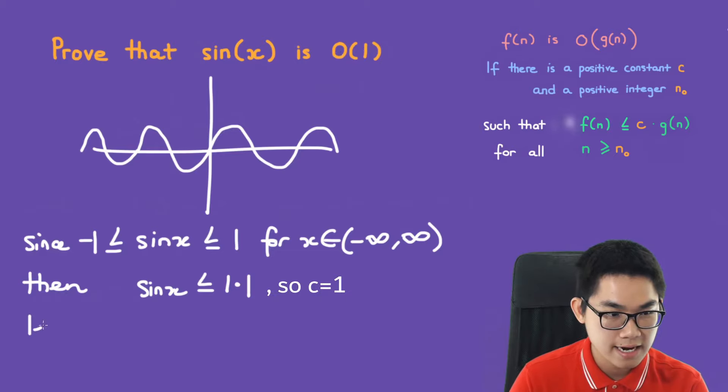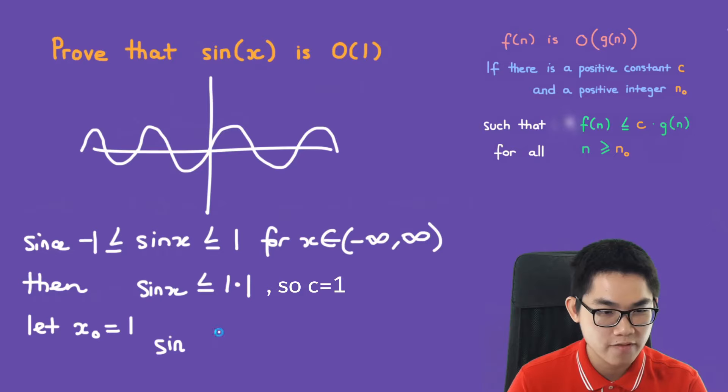And then let n naught, or actually, I mean x, let x naught equal to 1 because we're using x, not n here. So plugging in sine of 1 is approximately 0.84 if you put it in the calculator. So this would be 0.84, which is indeed less than or equal to 1.